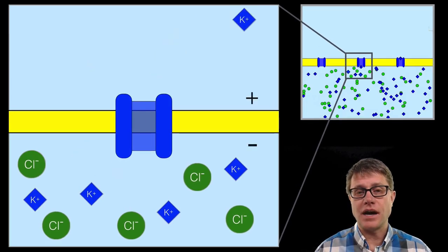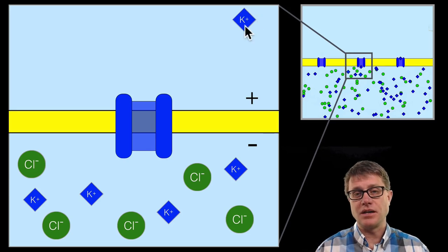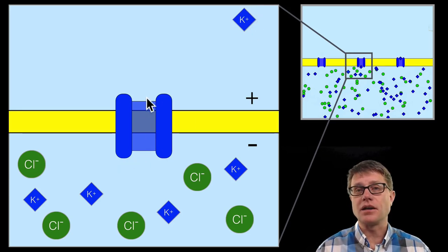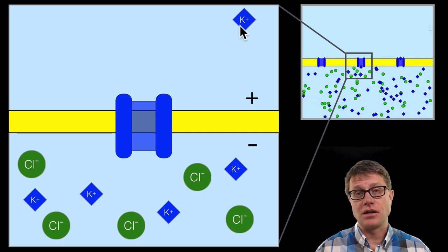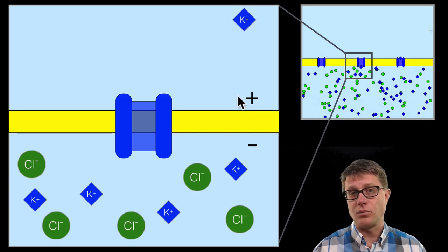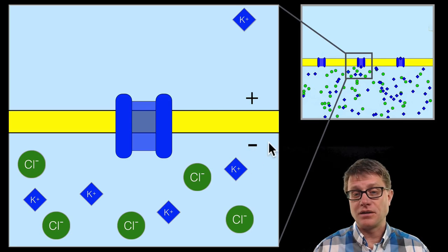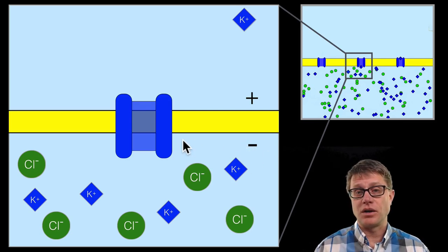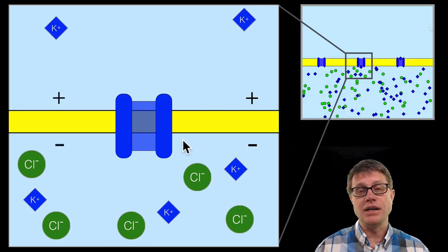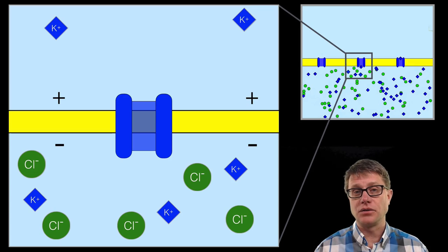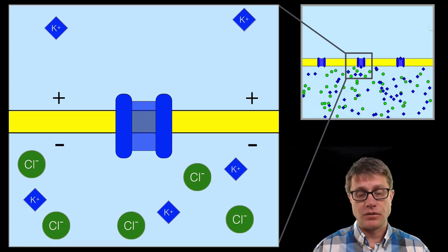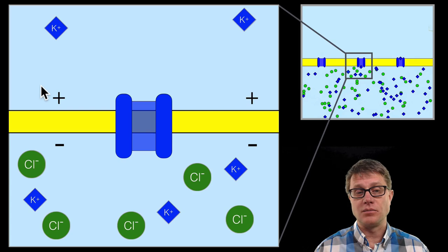So once a potassium goes through, once this potassium ion goes through, again it can go through this channel, it has got a charge. And as it moves through, we have an increase in the positive charge outside the membrane. And now we have a relative negative charge on the inside of the membrane because we have lost that potassium ion. Each time a potassium ion goes through, we are building up a charge. We have got a positive charge on the outside of this membrane and a negative charge on the inside.